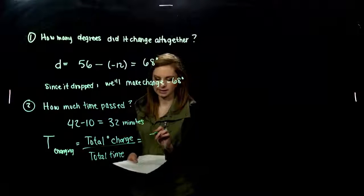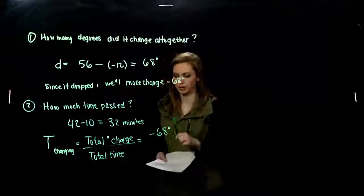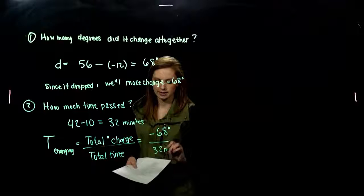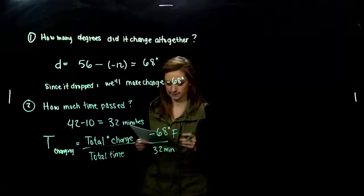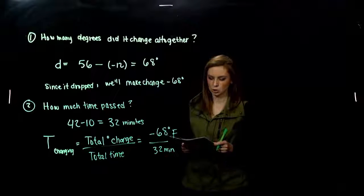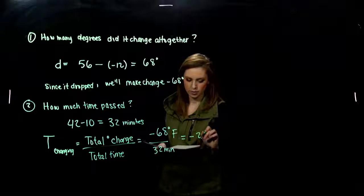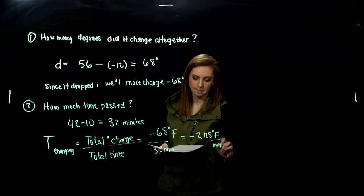So what are we looking at? Negative 68 degrees was the total change in temperature that we had. Total change in time was 32 minutes. This was in Fahrenheit, correct? Yes. Alright. So 68 divided by 32, we're looking at negative 2.125 degrees Fahrenheit per minute.